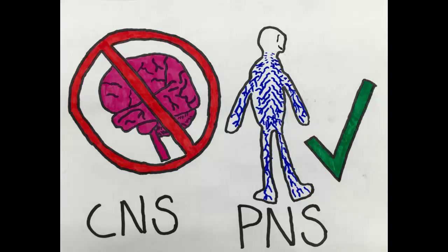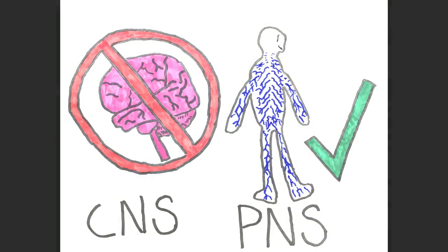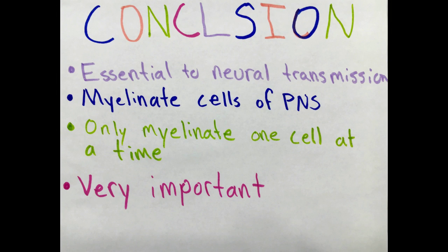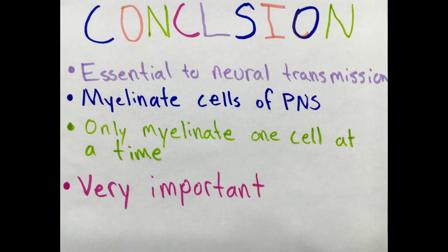Schwann cells are found in all nervous tissue excluding the brain and spinal cord. They myelinate the axons of nerves in our arms, hands, legs, feet, and toes. In conclusion, Schwann cells are very essential to neural transmission. They are the myelinating cell of the peripheral nervous system, myelinate by wrapping around the axon, form nodes of Ranvier to speed up transmission, and are only able to myelinate one axon at a time.